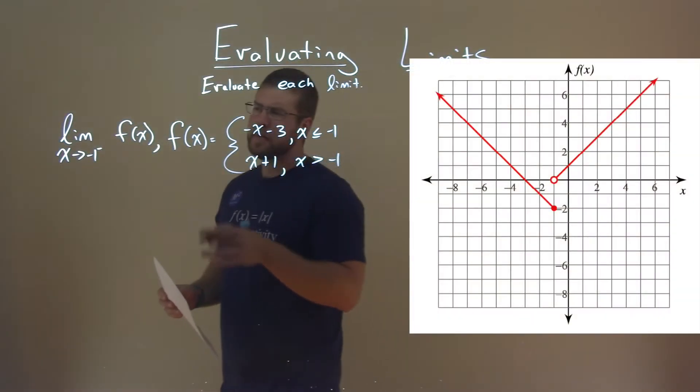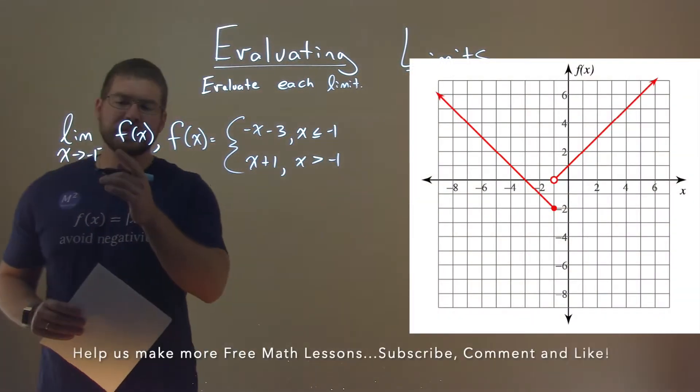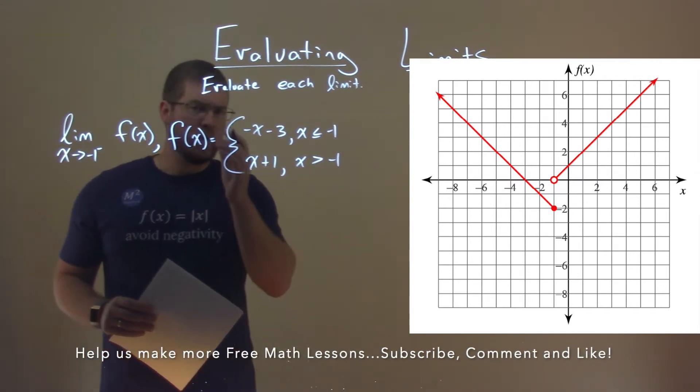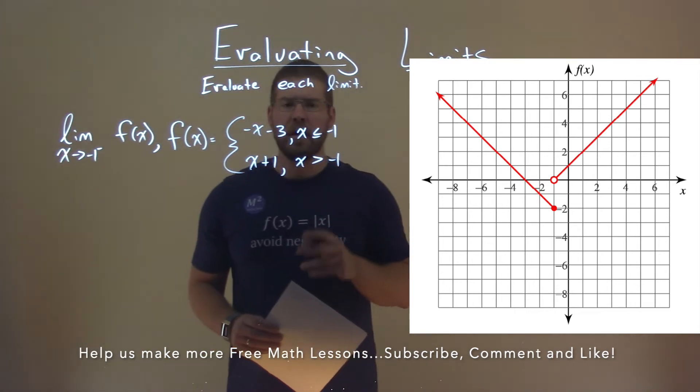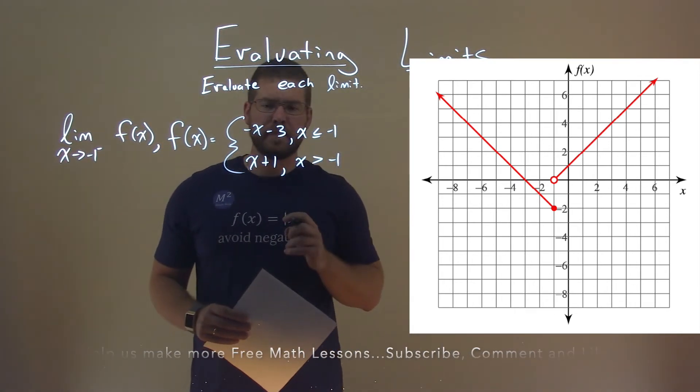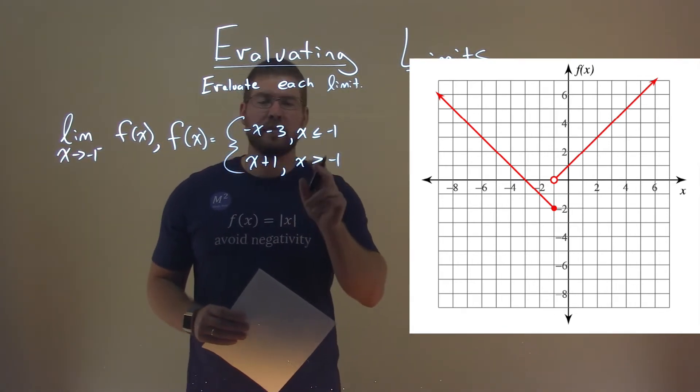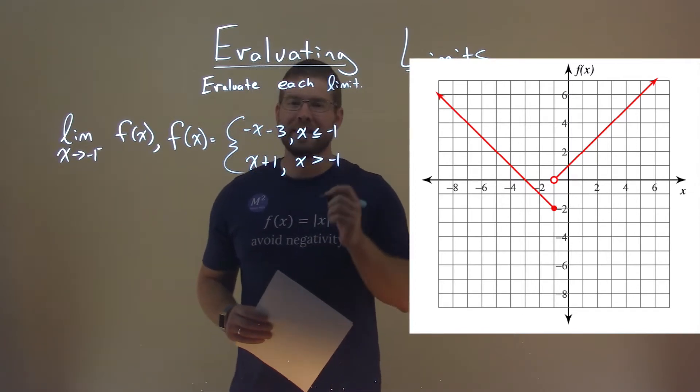We're given this problem right here: the limit as x approaches negative 1 from the left of f(x), where f(x) is equal to the piecewise function negative x minus 3 where x is less than or equal to negative 1, and x plus 1 where x is greater than negative 1. We need to evaluate this limit.